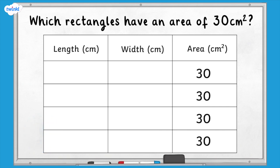There are four rectangles that have a length and width which are both whole numbers with an area of 30 centimetres squared. Well done if you found them all.